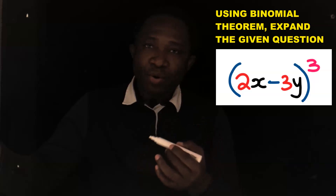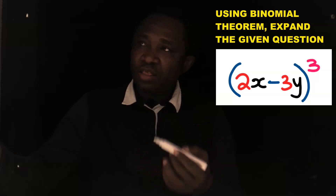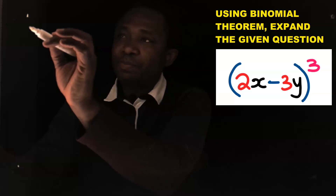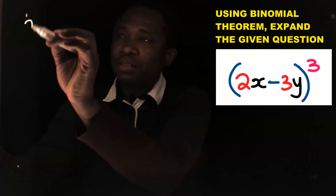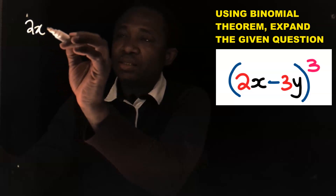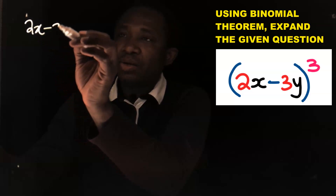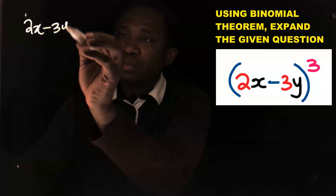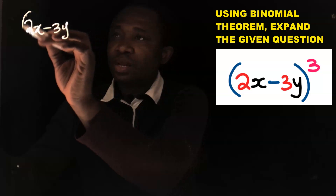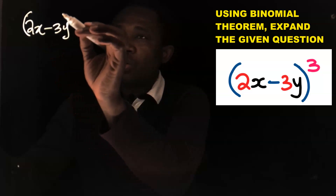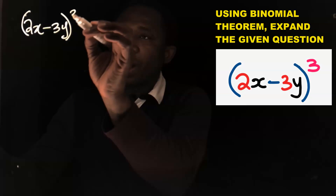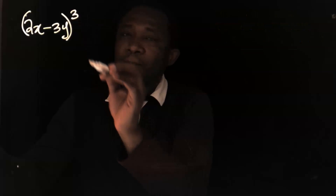Using the binomial theorem, we are going to expand (2x minus 3y) all to the power of 3.